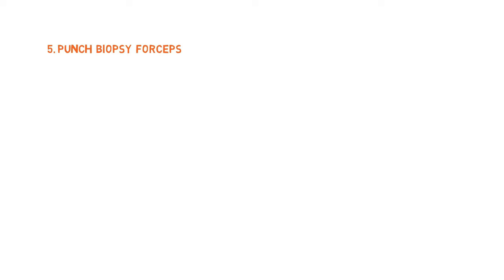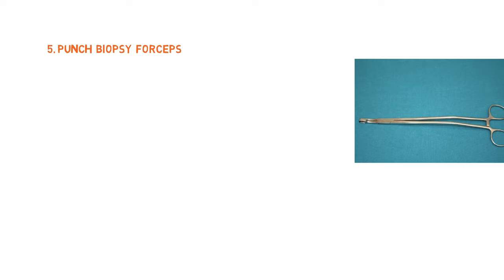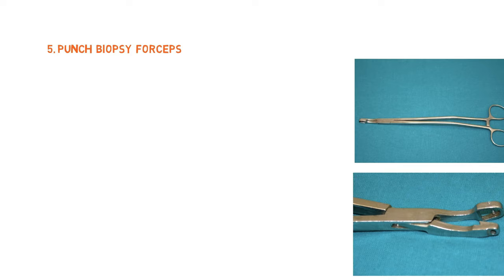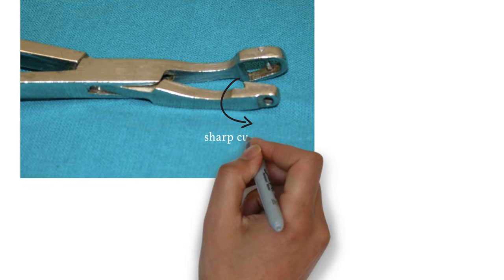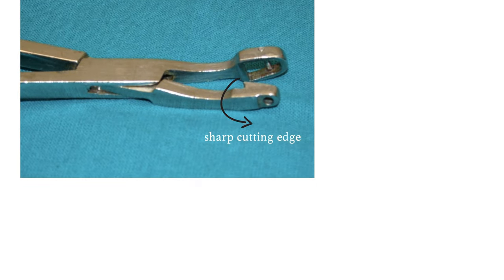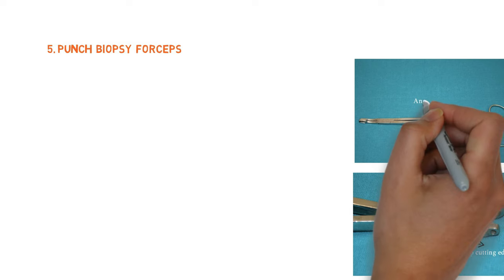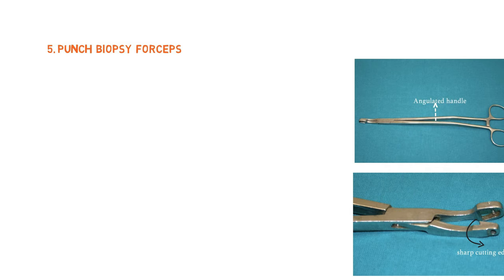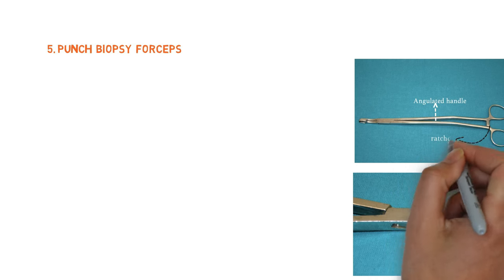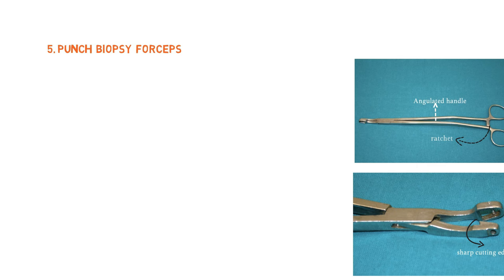Our next instrument is punch biopsy forceps. It is cup-shaped and has square jaws. The upper cup has sharp cutting edges and the lower cup holds the tissue. It has an angulated handle and ratchets with a cross joint, similar to the hemostatic forceps.